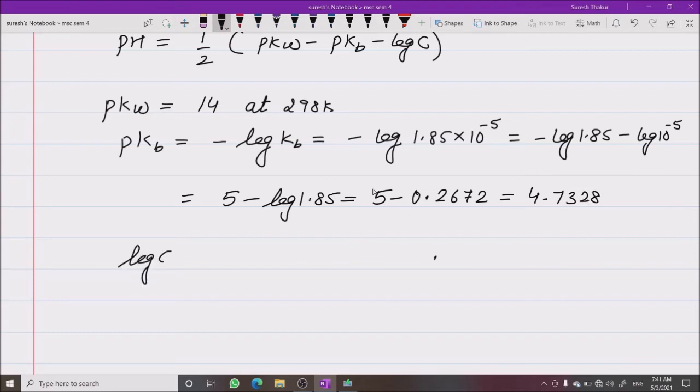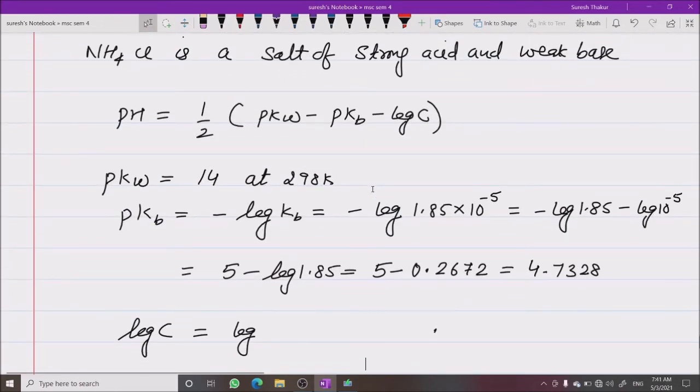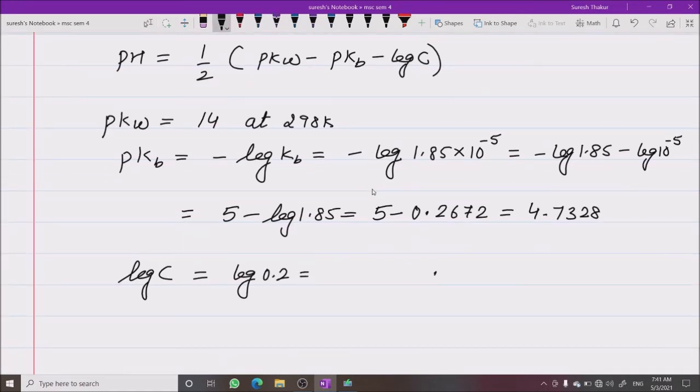Log C is also required, and the concentration is 0.2. Log of 0.2 can be written as 2 × 10^-1. So it's log of 2 plus log of 10^-1. That is 0.3010. Log 2, take it as 0.3 minus 1, which is minus 0.7.